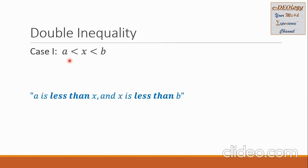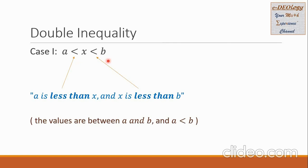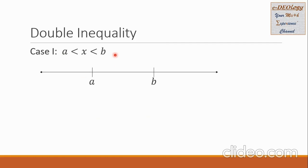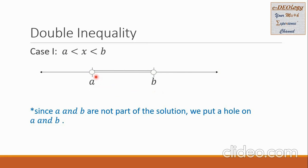We read this as a is less than x and x is less than b. Take note that the values are between a and b, and a is less than b. If we're going to put this on the number line, first let us draw a number line and put the numbers a and b on it. Make sure that the lower number a is on the left side and the bigger number b is on the right. Then we're going to connect these two numbers with a line segment. Since a and b are not part of the solution, we put a hole on a and b.